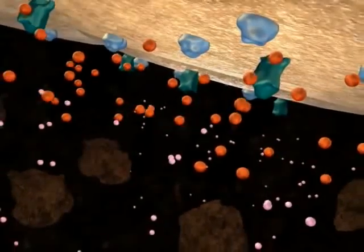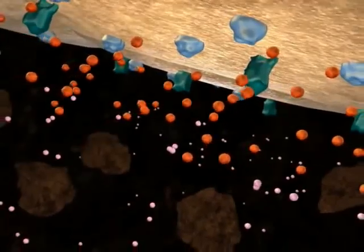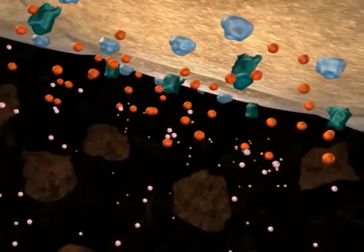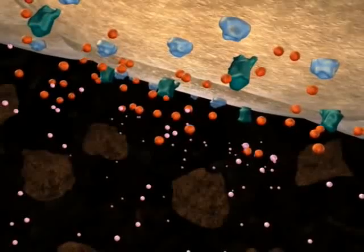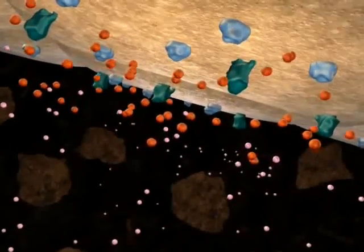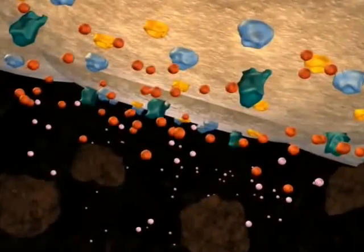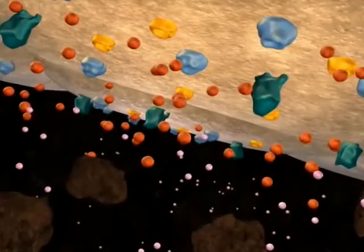While this protein can convert ferric iron into ferrous iron, additional help is required to move the iron into the plant. Another protein, a ferrous iron transporter, also found in the root cell membrane, is needed to move the Fe2+ into the root cortex.